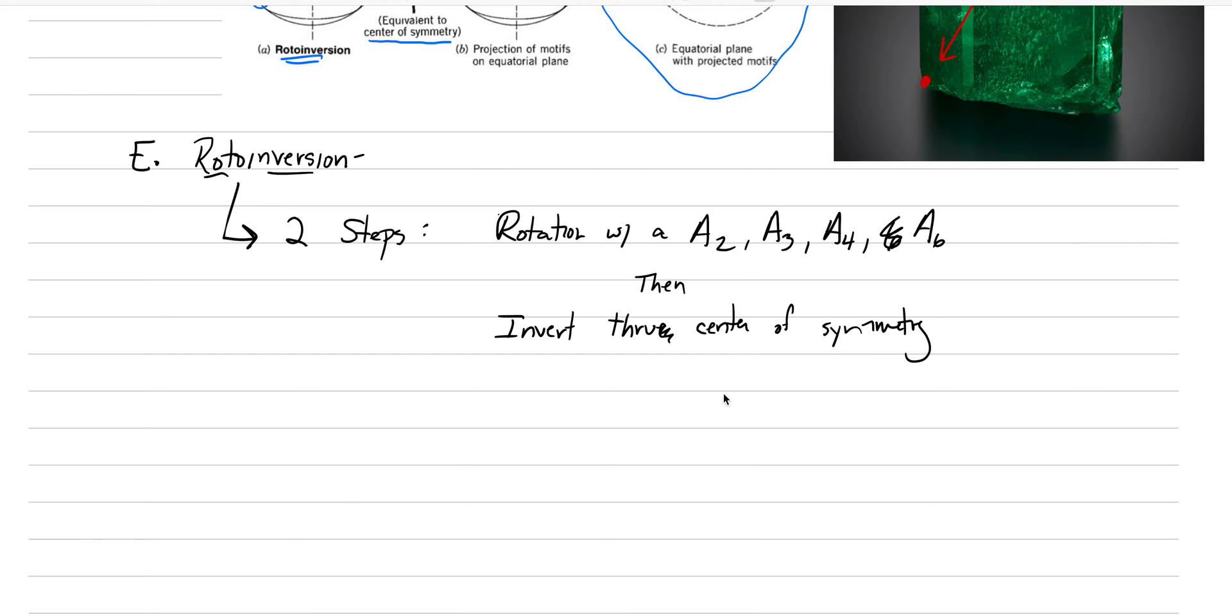The first step is a rotation with a two-fold, three-fold, four-fold, or six-fold axis. Then invert through center of symmetry. The symbology we have for rotoinversions, the symbol is a number with a line over the top. This symbology we would say out loud as a bar two, which means that there is an A2 with an inversion. We have bar twos, bar threes, bar fours, and bar sixes, except we never use the bar two because a bar two is just a mirror plane. We never use bar sixes because this is just an A3 plus a mirror plane. There's only two rotoinversions you need to learn: the bar three and the bar four.